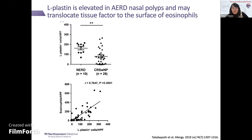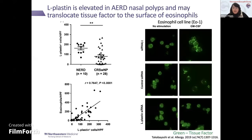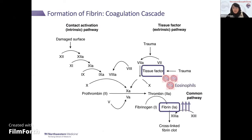L-plastin translocates tissue factor to the surface of the eosinophil, and L-plastin was found to be significantly elevated in AERD polyps, the most severe form of this disease. There was a nice correlation between L-plastin-level positive cells and eosinophils. When eosinophils are cultured with GM-CSF and L-plastin is present, you see tissue factor expression on the cell surface, but if you use siRNA to knock out L-plastin, this upregulation of tissue factor on the surface disappears. So one possible mechanism is eosinophils contributing to fibrin formation via the coagulation cascade.